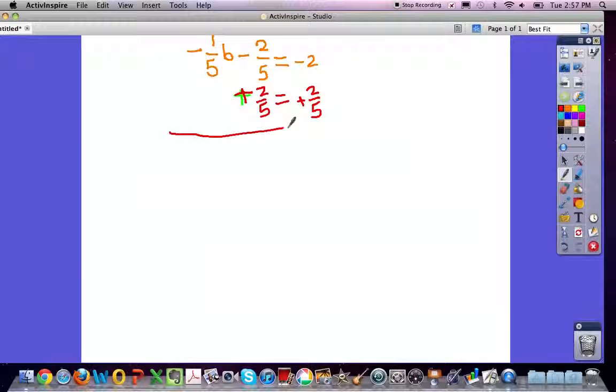Because that is the property of equality. So what happens is that now we end up having negative 1 fifth on one side and negative 8 fifths.